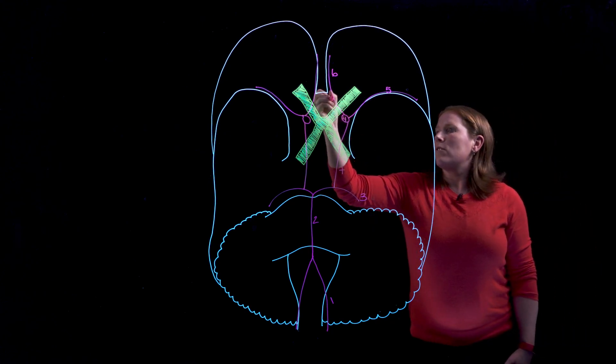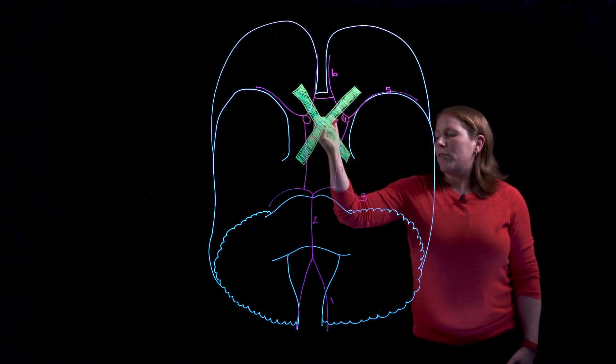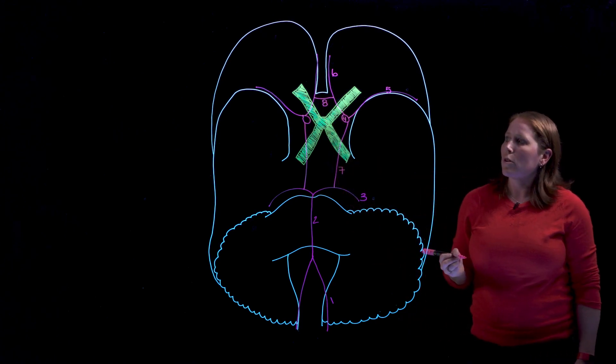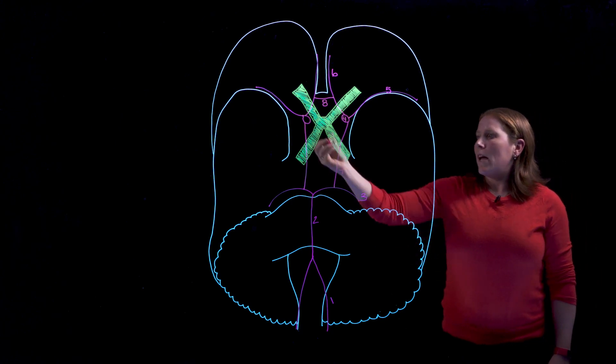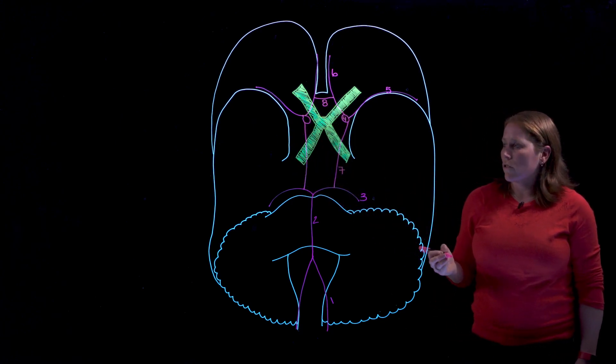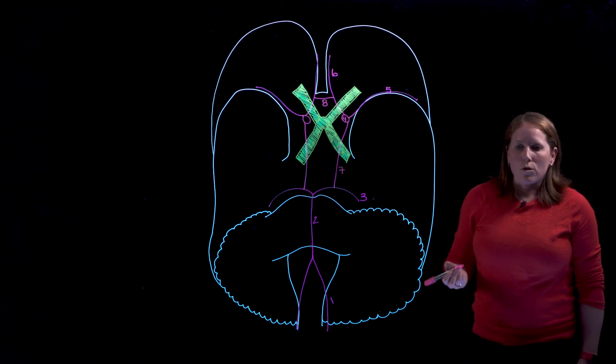We also have a single midline anterior communicating artery that connects left and right anterior cerebral arteries and so now that you can see around the optic chiasm we actually do have a circle and this is referred to as the Circle of Willis.